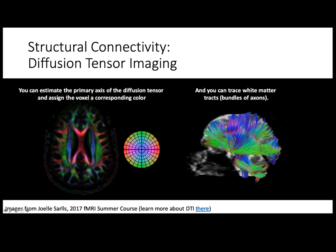This water molecule's diffusion can be represented by a tensor — a measure of the direction of that diffusion. You can estimate that primary axis, that primary direction of the diffusion, and assign that voxel a corresponding color. So you can tell that molecules in a particular area are going mostly up and down based on the color. Based on these directions, you can also trace white matter tracts — the bundles of axons going between neurons. We can trace them by going voxel to voxel, seeing which direction things tend to be going, all the way from beginning to end.